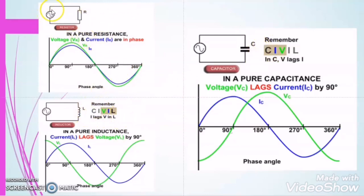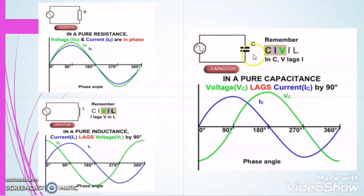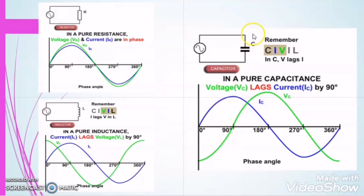When we supply a single phase supply to a resistor, the voltage and current are in the same phase — this is the property of resistance. If we supply power to an inductor, the current will lag the voltage by 90 degrees — this is the characteristic of an inductor. And when we supply a single phase power supply to a capacitor, the current will lead the voltage by 90 degrees — this is the characteristic of the capacitor.